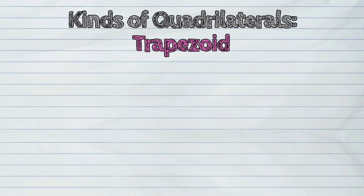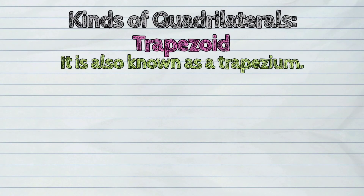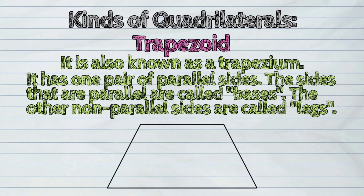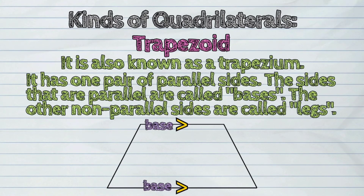Fifth, a trapezoid, also known as a trapezium. It has one pair of parallel sides. The sides that are parallel are called bases, and the other non-parallel sides are called legs.